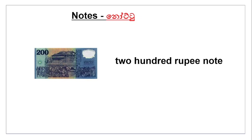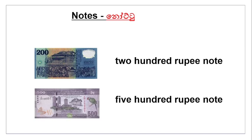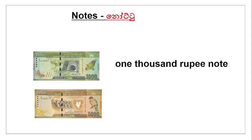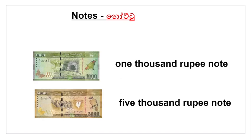200 rupee note — rupee ala kaase. 500 rupee note — rupee ala paase. 1,000 rupee note — rupee ala dhahe nōt. 5,000 rupee note — rupee ala paan dhahe nōt.